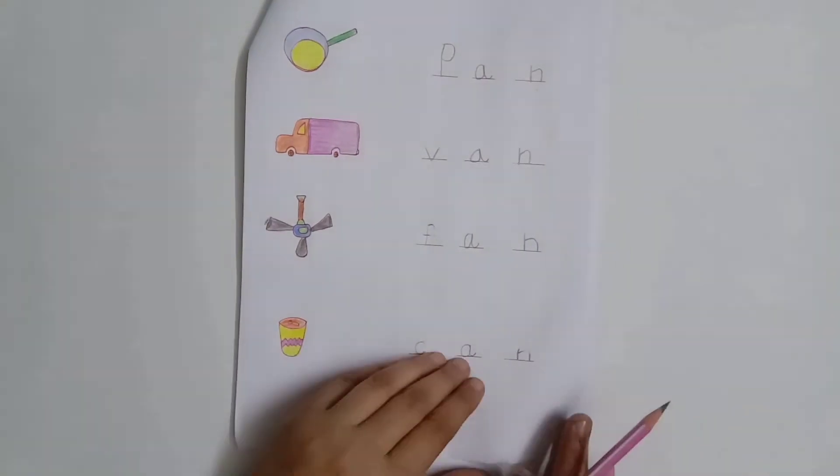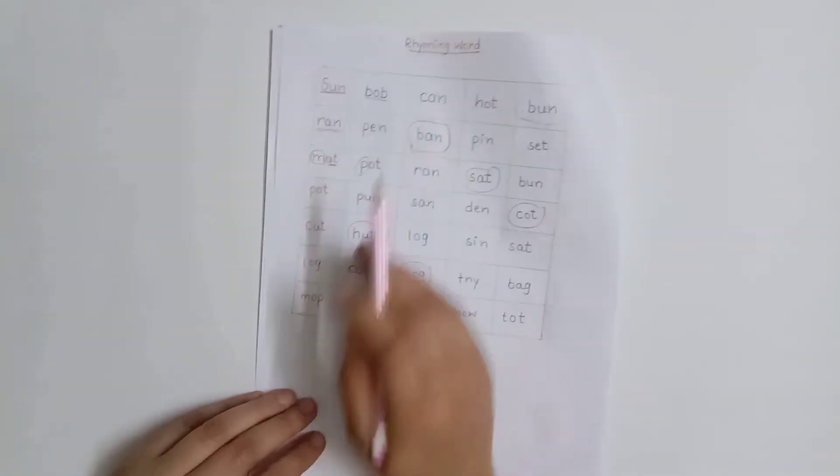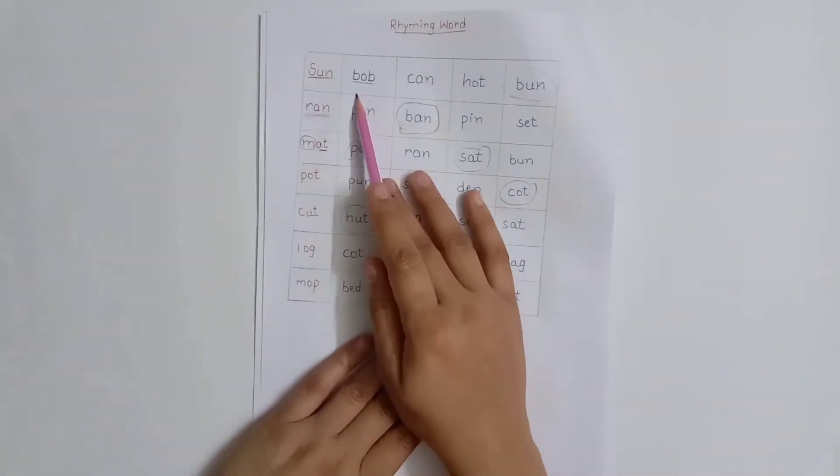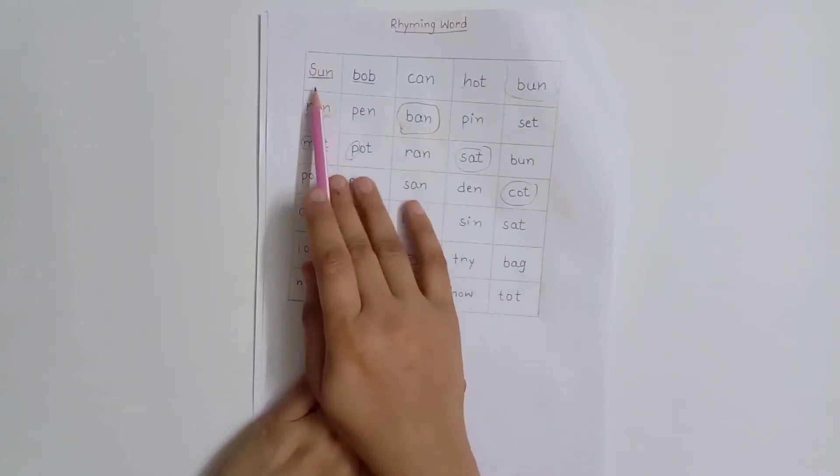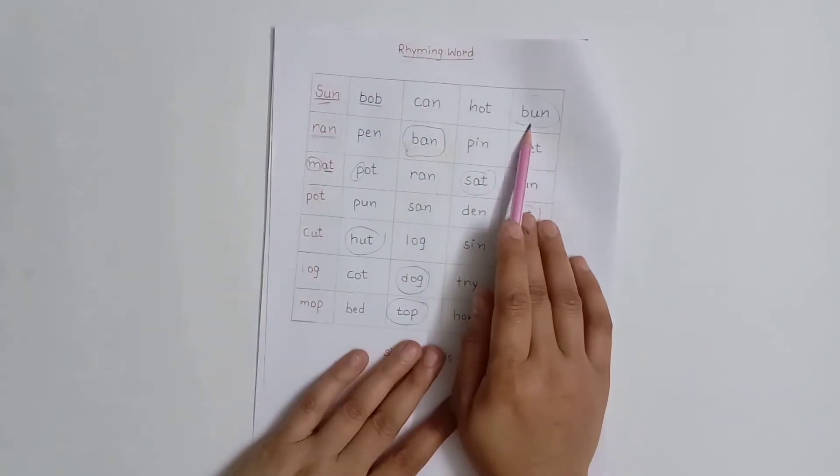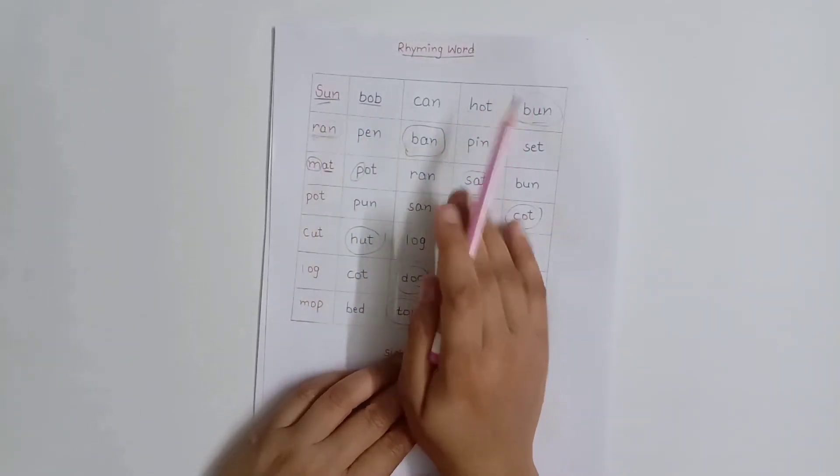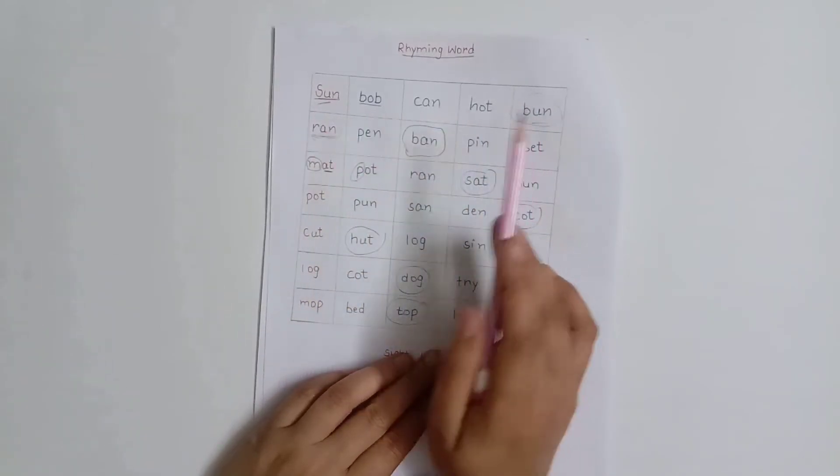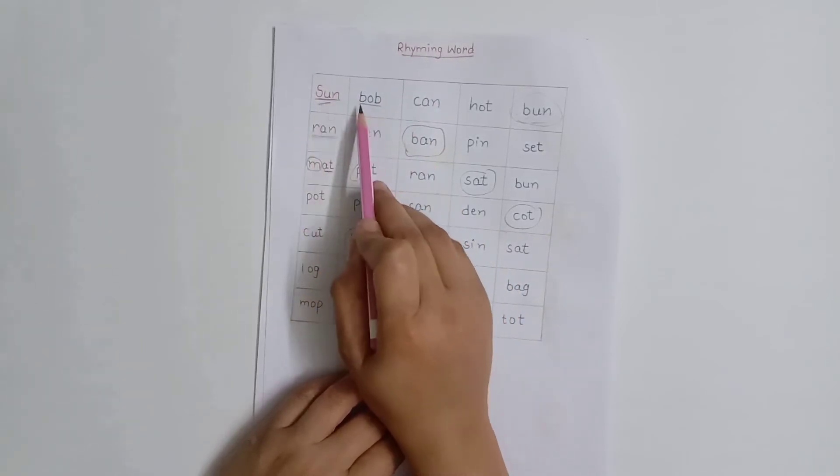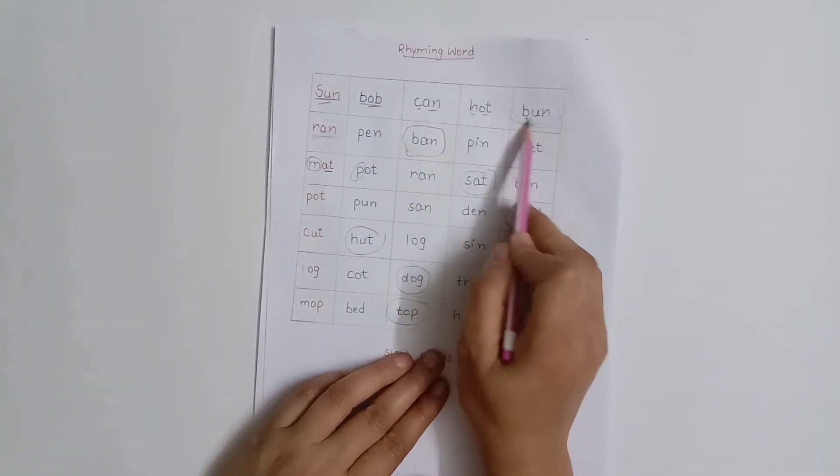After that, our next worksheet is a rhyming word worksheet. For this, I have written three letter words here and there are four options. The child has to choose the correct option. For example, here is 'sir' and 'son', so he has to read all four options and find the rhyming word. The next is 'bob', then 'can', 'thought', and 'son'.